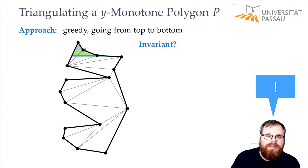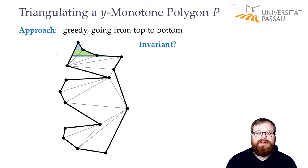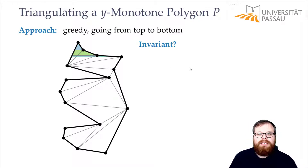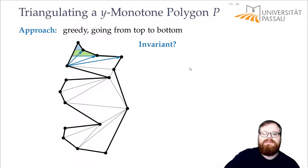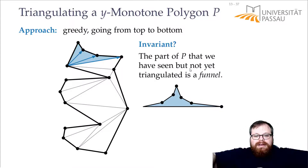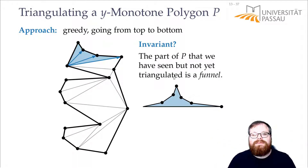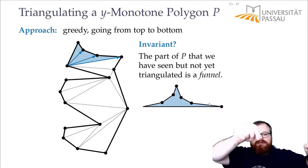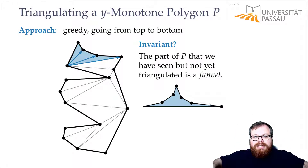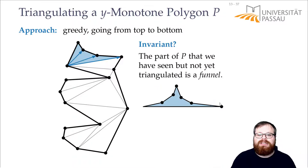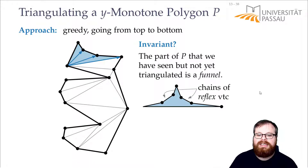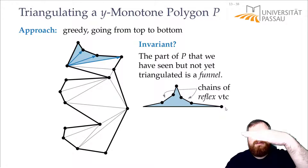We know that all the vertices we have on this part, except the top one, must be reflex vertices — vertices where the interior angle is greater than 180 degrees. If there were a convex vertex somewhere, we could connect it to someone before. It's only while going outwards that we cannot connect anything. So basically, everything we've seen but not triangulated forms a funnel — it can extend left or right, but it always bends outwards. As soon as it bends inwards, we can make a connection. So we have two chains of reflex vertices in everything we've looked at so far.